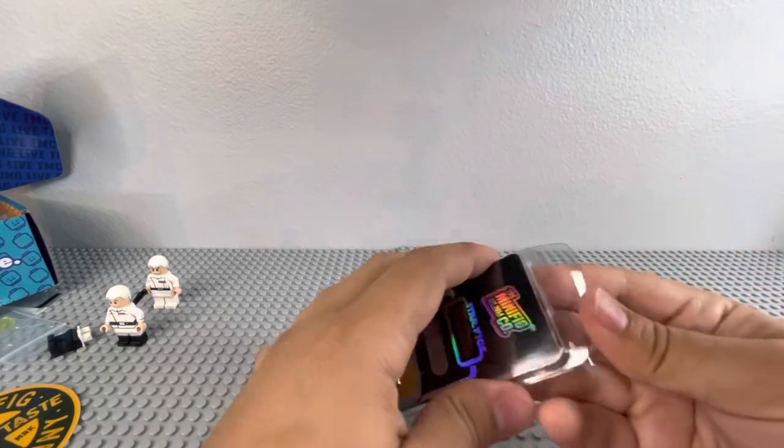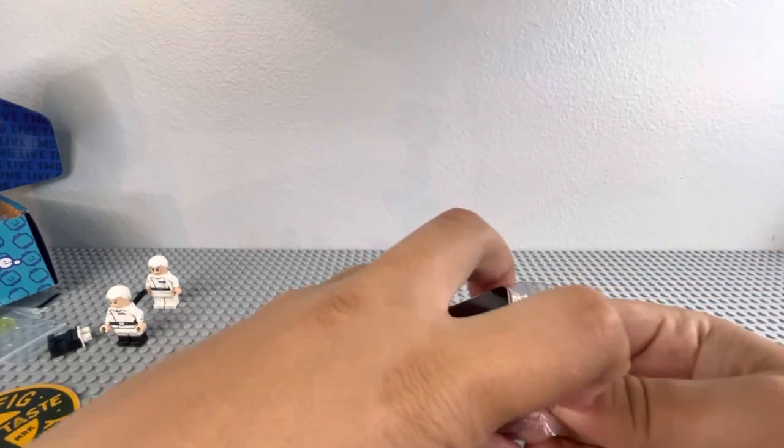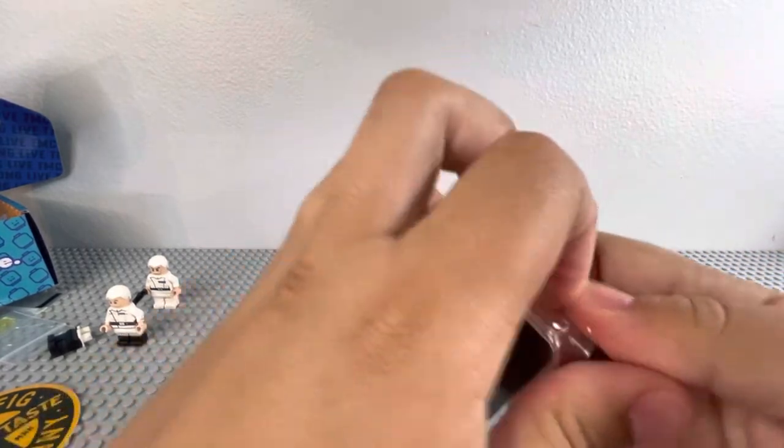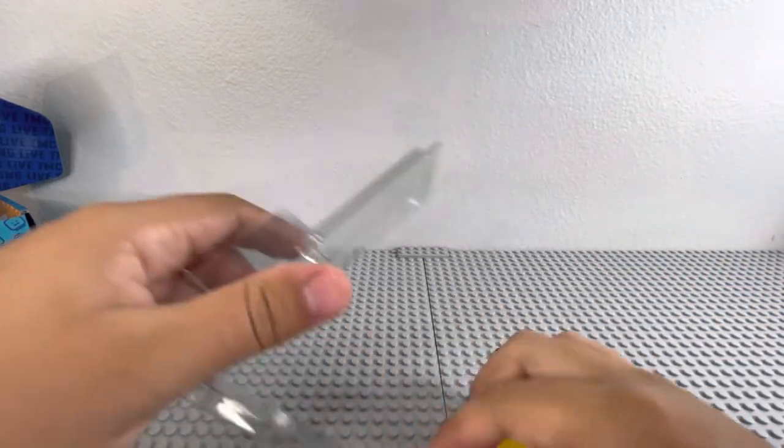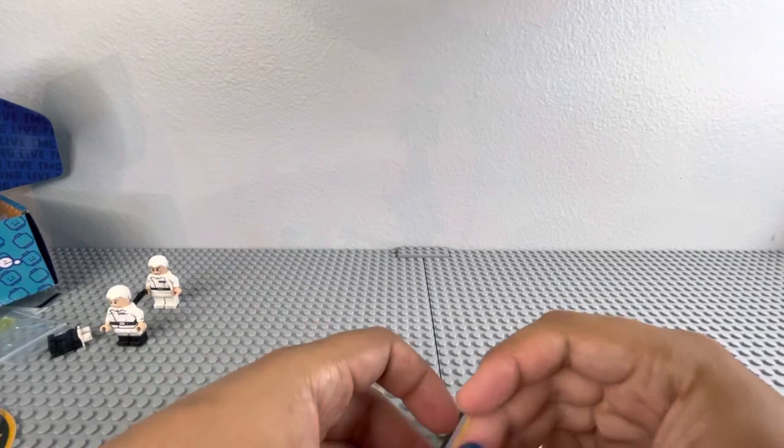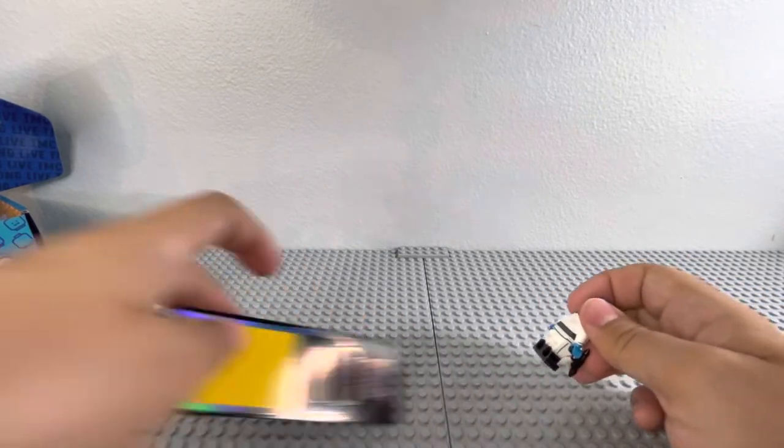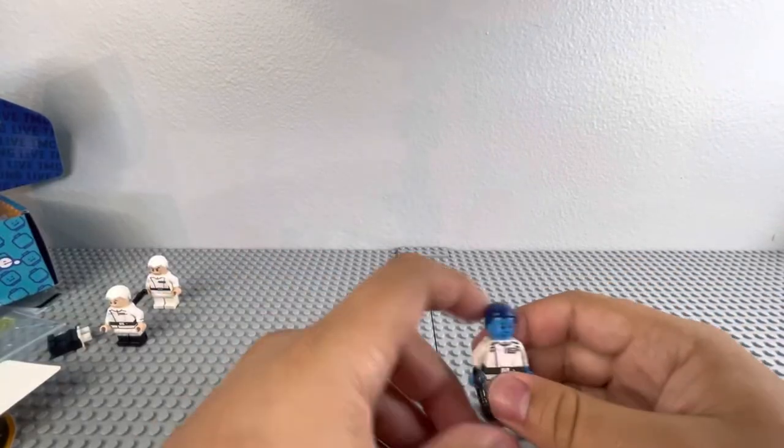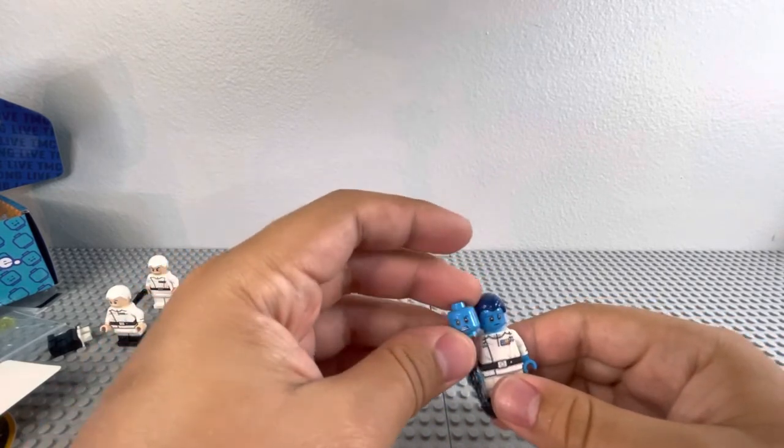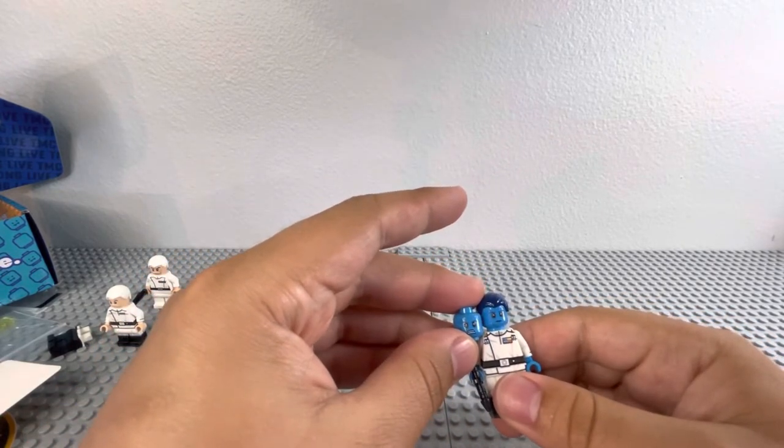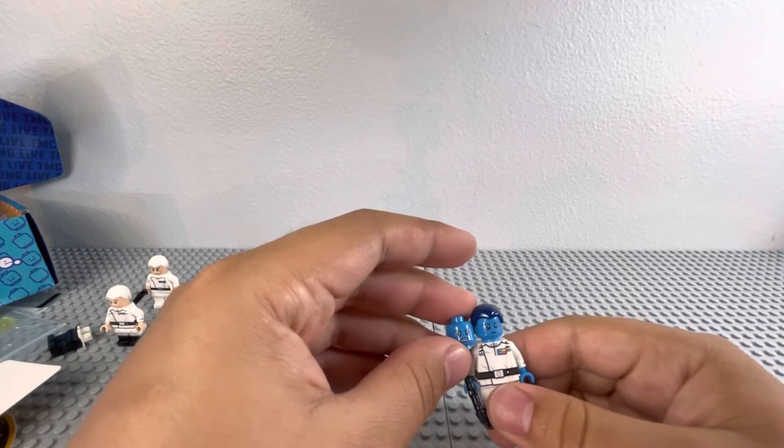Next figure is Grand Admiral Thrawn. This figure, just like Yularen with the other legs, this one comes with another head. Instead of, they probably could have just made a double-sided face, to be honest. But they just went the extra mile and got an angrier head.